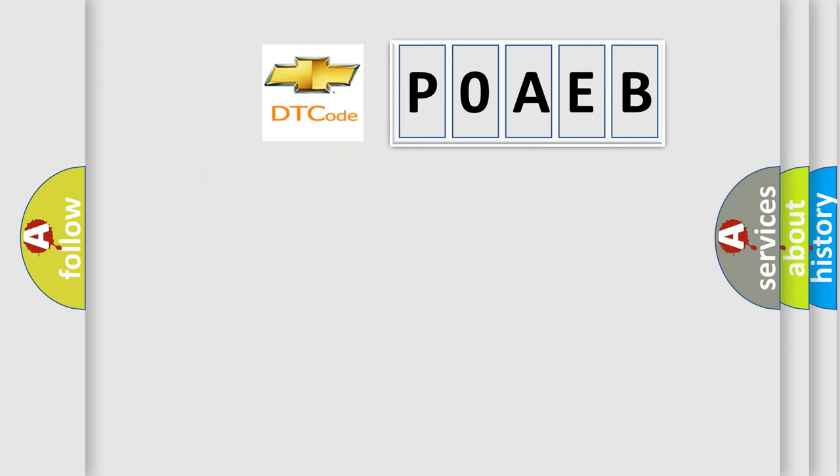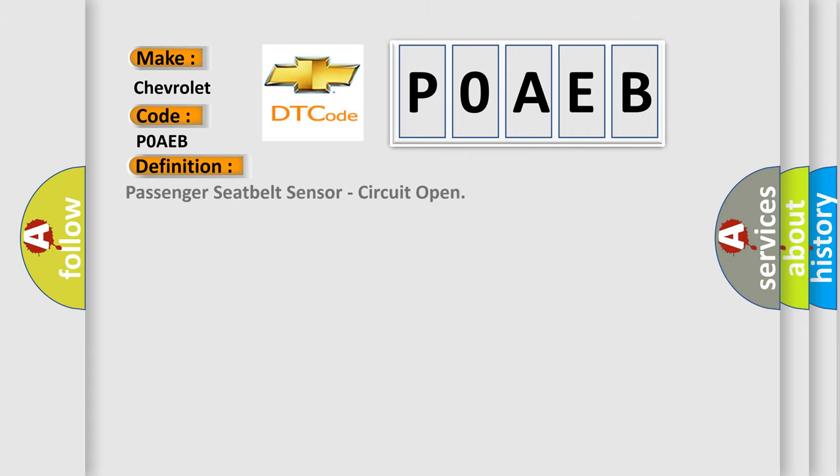So, what does the diagnostic trouble code P0AEB interpret specifically for Chevrolet car manufacturers? The basic definition is: Passenger seat belt sensor, circuit open. And now this is a short description of this DTC code.